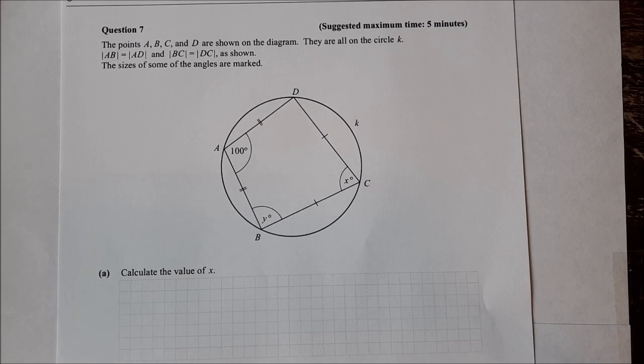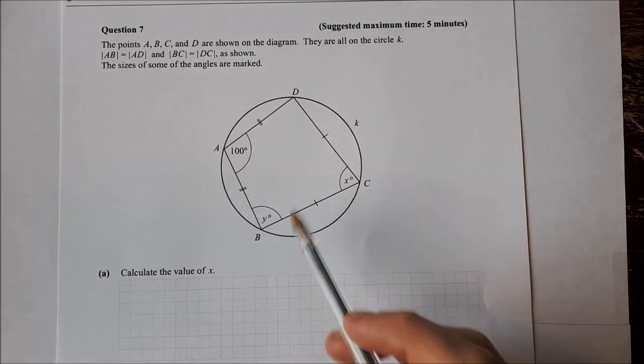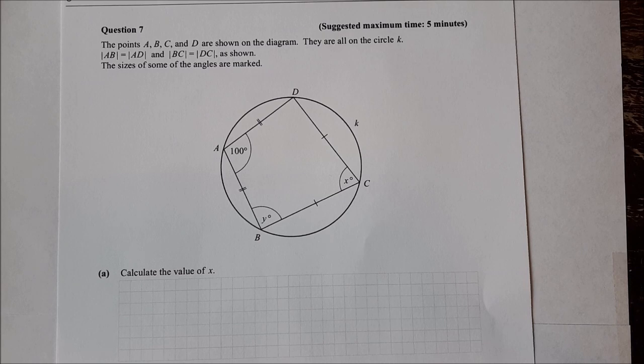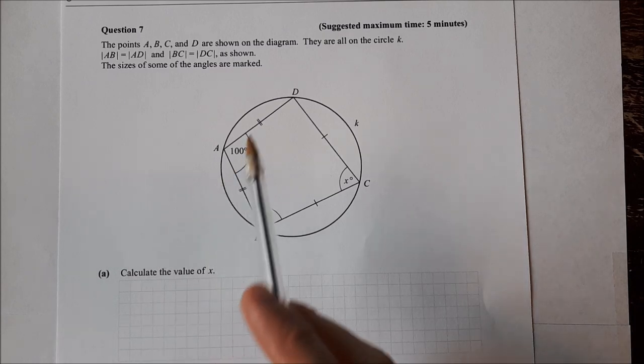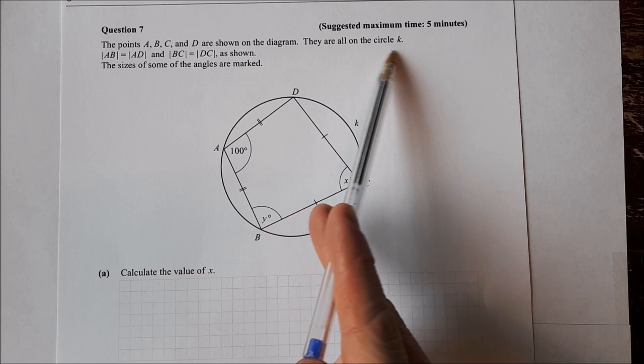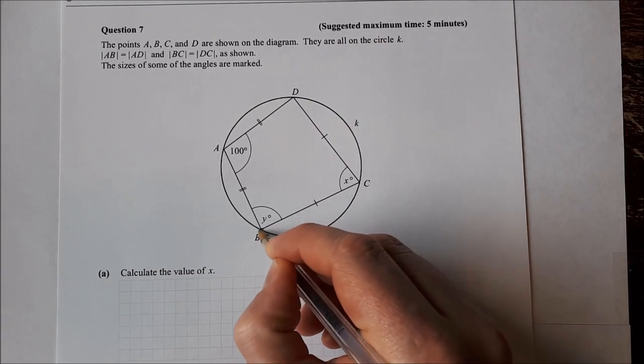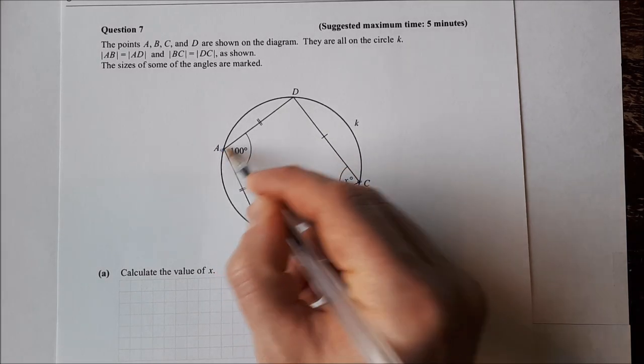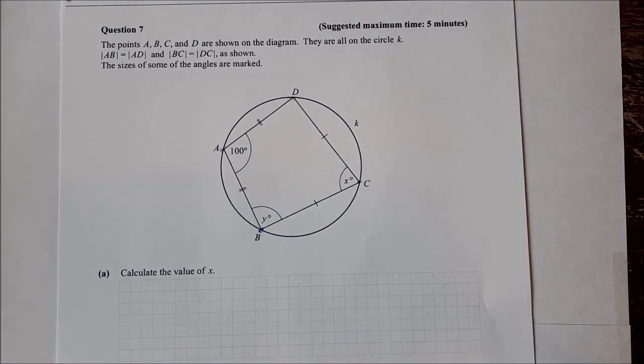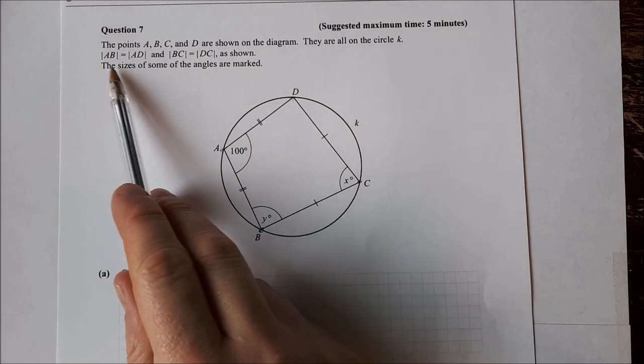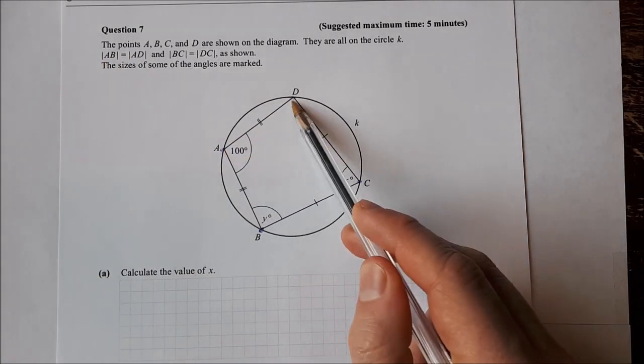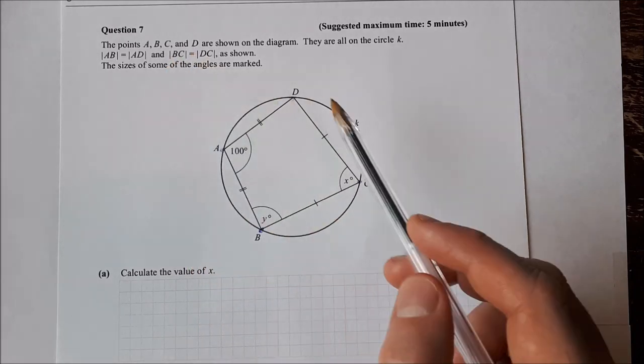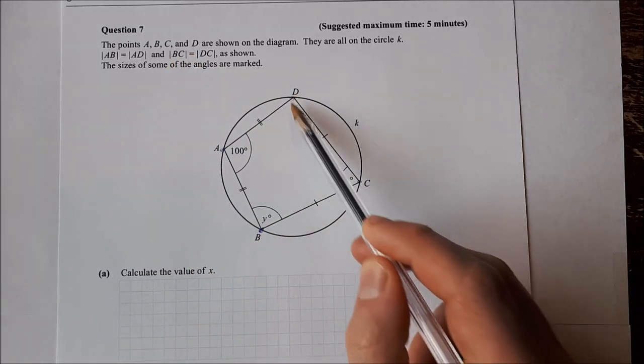Okay so in the second question, this is from 2016, we're given a quadrilateral in a circle. This is called a cyclic quadrilateral. The points A, B, C and D are shown on the diagram. They are all on the circle K. So that's basically the definition of a cyclic quadrilateral is that all these points here are on a circle. We're also told that AB is equal to AD, so this length is equal to this length. And BC is equal to DC, so this length is equal to this length.